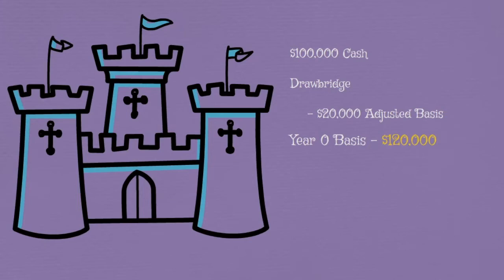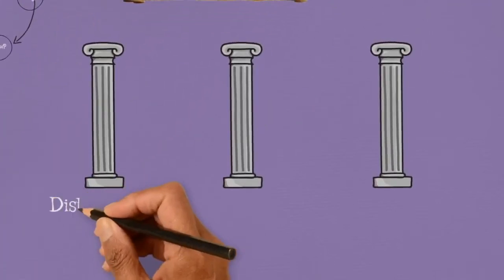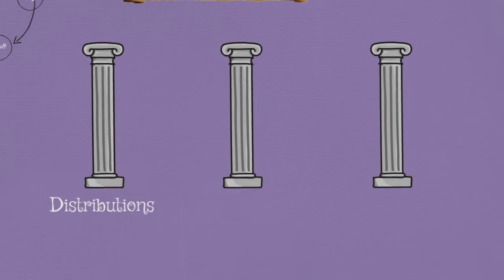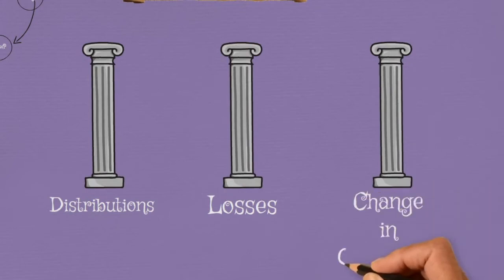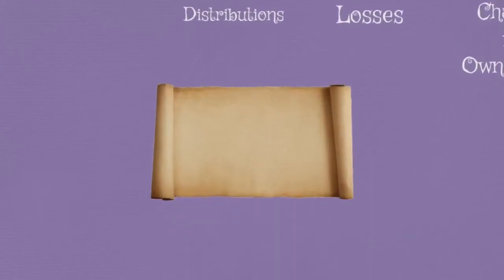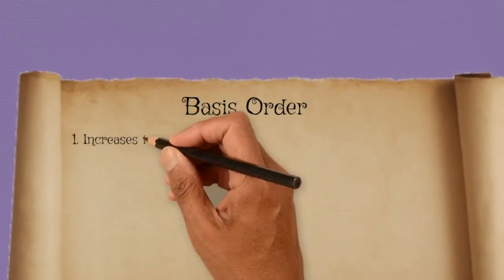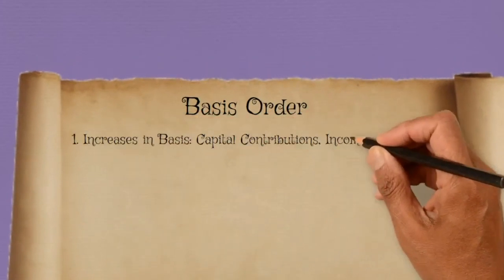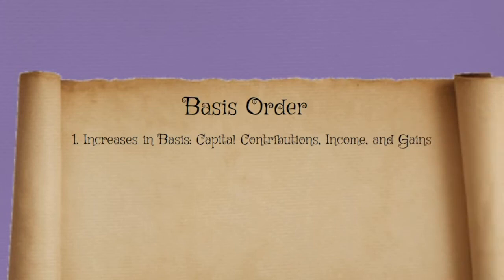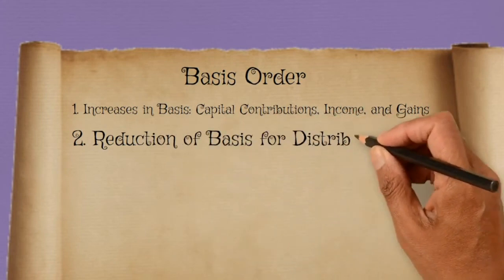Now that we have our initial basis, we start tracking basis over the life of the business. There are three taxation pillars I want us to keep in mind as we learn these rules: distributions, losses, and changes in ownership. We'll come back to these pillars throughout our examples. As we head into year one of our business, we need to understand the order of basis adjustments. First, basis increases. Basis is increased by capital contributions, income, and gains.